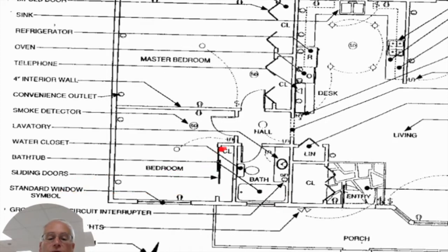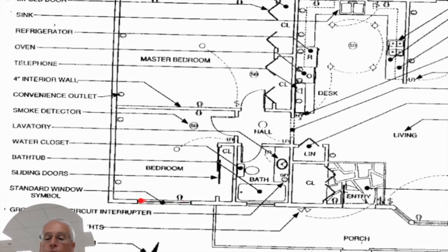Sliding doors — here's another closet; sliding doors would look like this, they look like they slide past each other. Standard window — blocking off the length of the window with a line or two going through the wall.